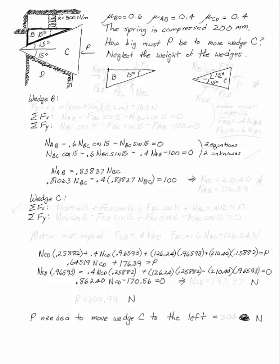The spring is compressed 200 millimeters at the top of this two-wedge system. I want to know how big P has to be to move that big wedge C.